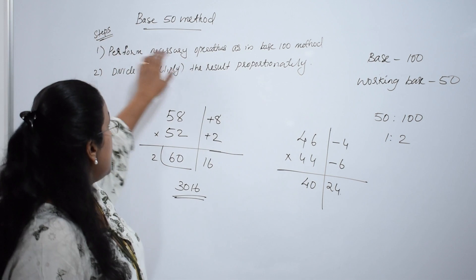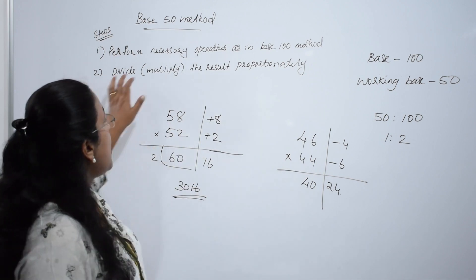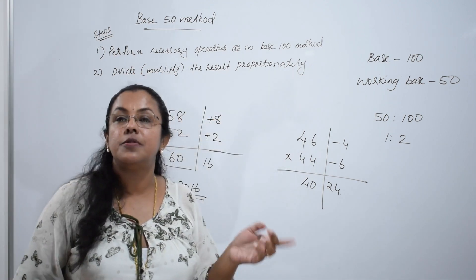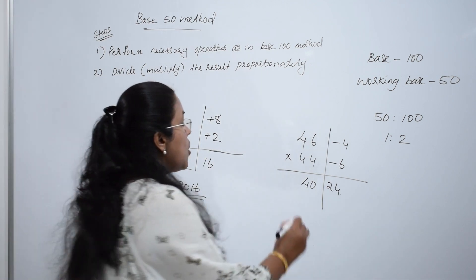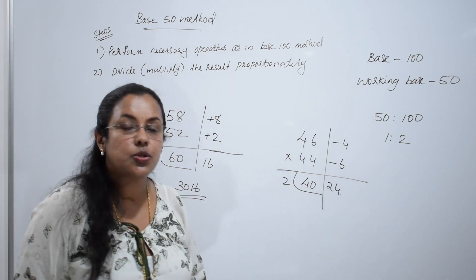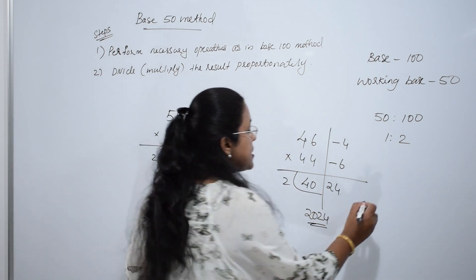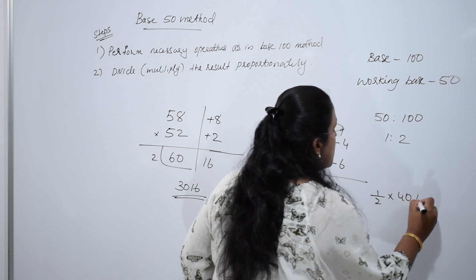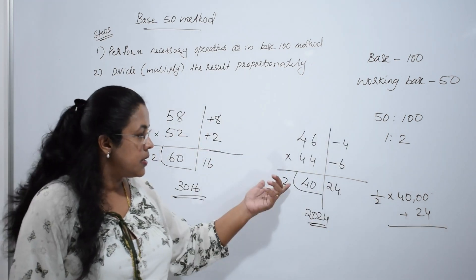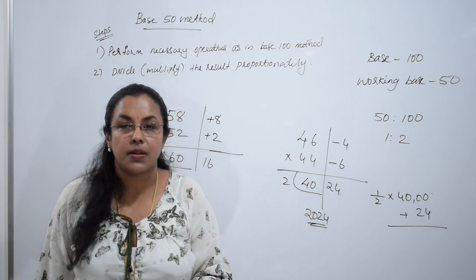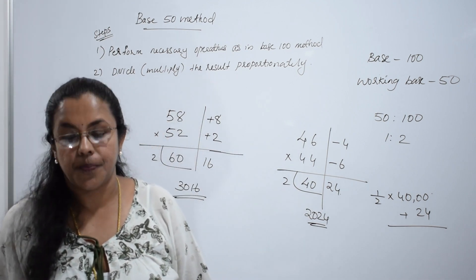Now, what is the next step? Divide or multiply the result proportionately. 50 to 100 is 1 to 2, so 50 is half of 100. Only divide the left hand side by 2. We get the answer as 20, 24. The reason is that half of 4000 plus 24 is the actual procedure. Half of 40 is 20. So the final answer is 2024.